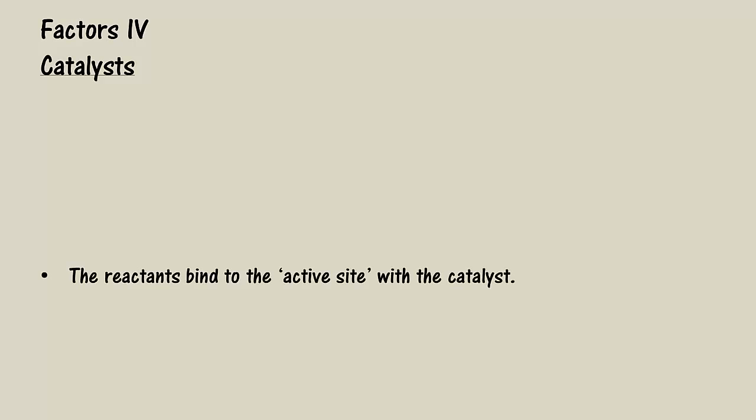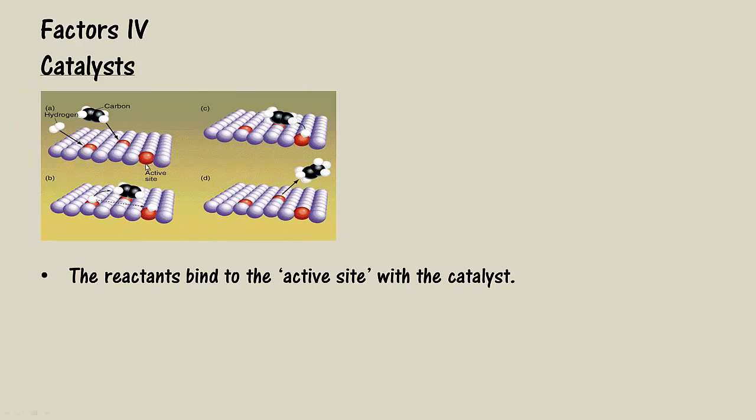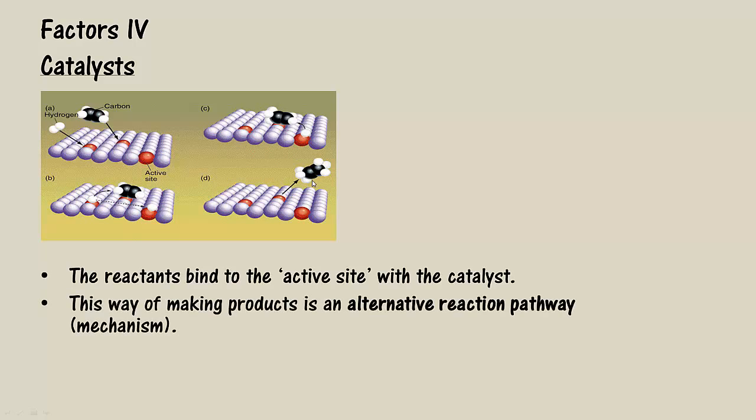The reactants come together on the catalyst, a place called the active site on the solid, seen here in red. Here we have ethane and hydrogen molecules, here, binding to the active site on the solid surface, forming this transitional state. The bonds and molecules are weakened, allowing the products to form and move off. This way of making products is often referred to as an alternative reaction pathway or mechanism. The key thing about this new pathway is that it is a lower energy pathway. The activation energy is lowered for this reaction.